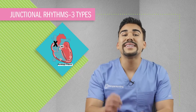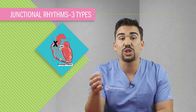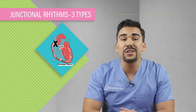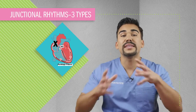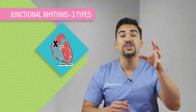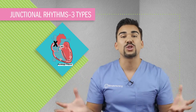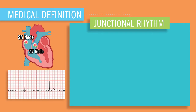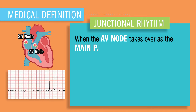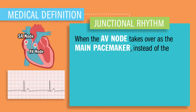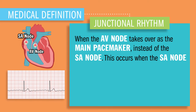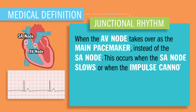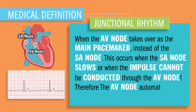This AV node has taken over as the main pacemaker in junctional rhythms. We call it junctional because it takes over at the AV node — basically the midway or junction between the atriums and ventricles of the electrical system. The medical definition is: junctional rhythms occur when the AV node takes over as the main pacemaker of the heart instead of the SA node. This occurs when the SA node slows or when the impulse cannot be conducted through the AV node, so the AV node automatically discharges an impulse.